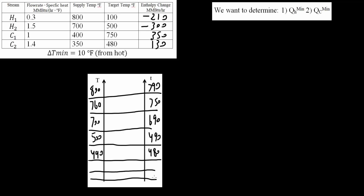We need 7 intervals total. Continuing down: 400 is cold, so 400 cold and 410 hot. Next, 350 is cold, giving 350 cold and 360 hot. Finally, 100 is hot, so 100 hot and 90 cold. The top row (highest temperature) stays blank, and we label intervals 1 through 7.